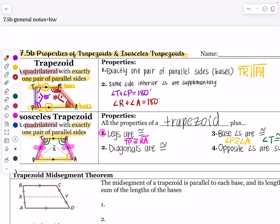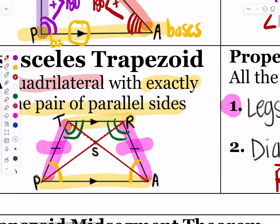The diagonals of an isosceles trapezoid are also congruent to each other. The diagonal from R to P is congruent to the diagonal from T to A. You can tell this shape is symmetric, so those diagonals should be congruent — the distance from T to A equals the distance from R to P.